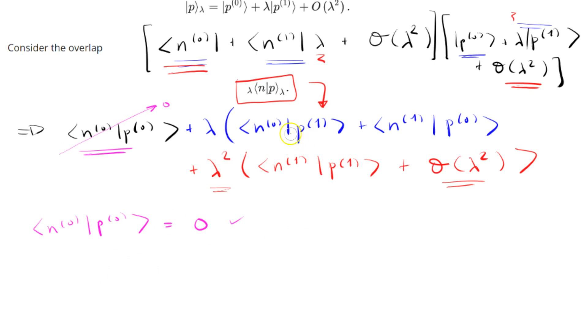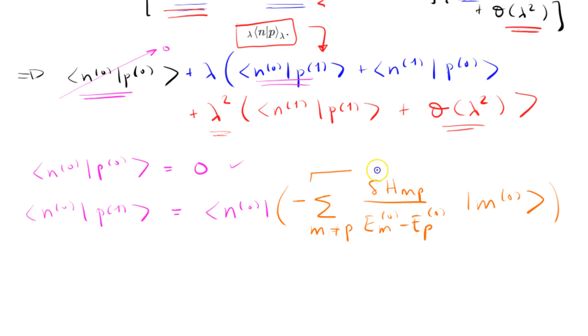Let's look at the next term. N0, P1. What is that going to give us? Well, we have a formula for P1, right? The formula for P1 is nothing more than, we get a different color here. It's nothing more than, if you guys remember, it's negative sum over M does not equal to P. And then we're going to have delta H, M, P, over E, M0 minus E, P0 times M0, right? Now, this whole thing right here is just a constant. You can pull it outside.